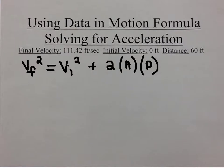Now that we have the final velocity in feet per second, we can use the motion formula to solve for acceleration. Final velocity squared equals initial velocity squared plus 2 times acceleration times the distance.